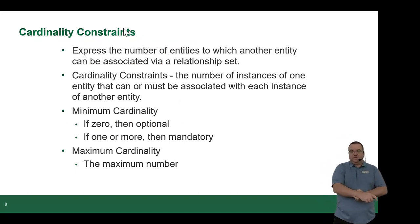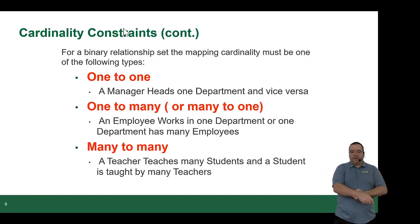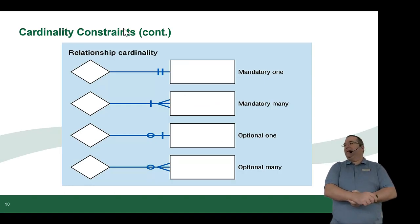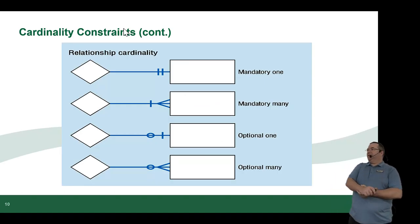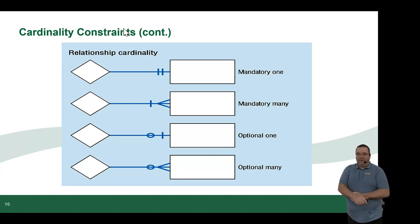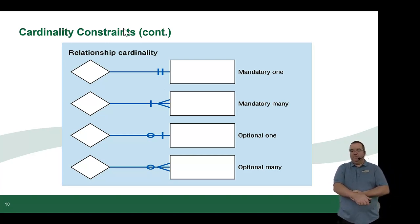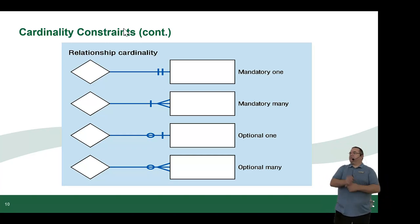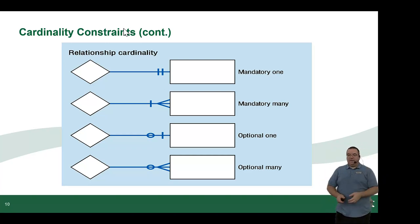We've already covered the cardinality symbols: mandatory one, mandatory many, optional one, optional many. You'll notice that in this version of the diagram, we have a diamond involved, whereas before we just had two boxes — it's just different styles of the same thing. In a model where we want to show that each school may enroll many students or none, and each student attends only one school, it would be drawn with a zero-or-more on the school side and a mandatory one on the student side.